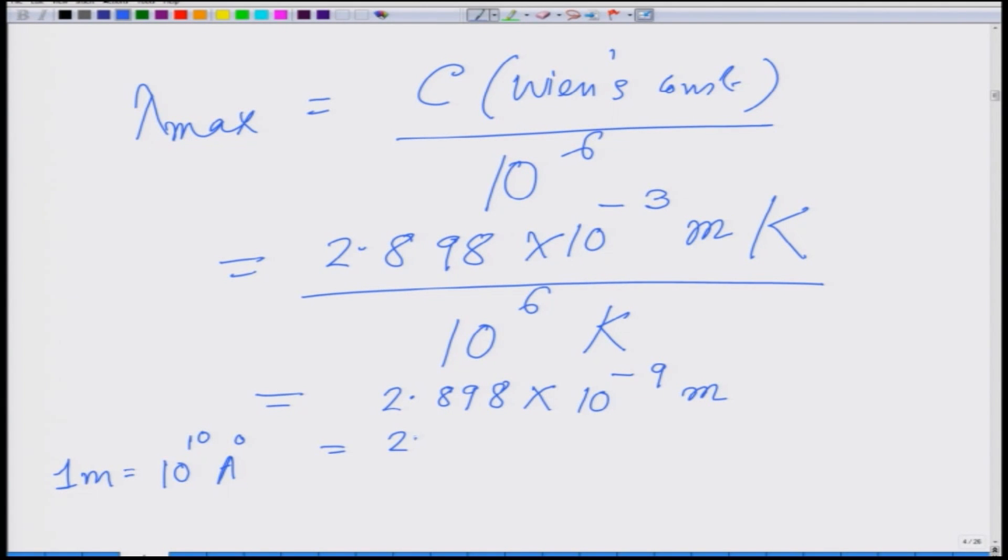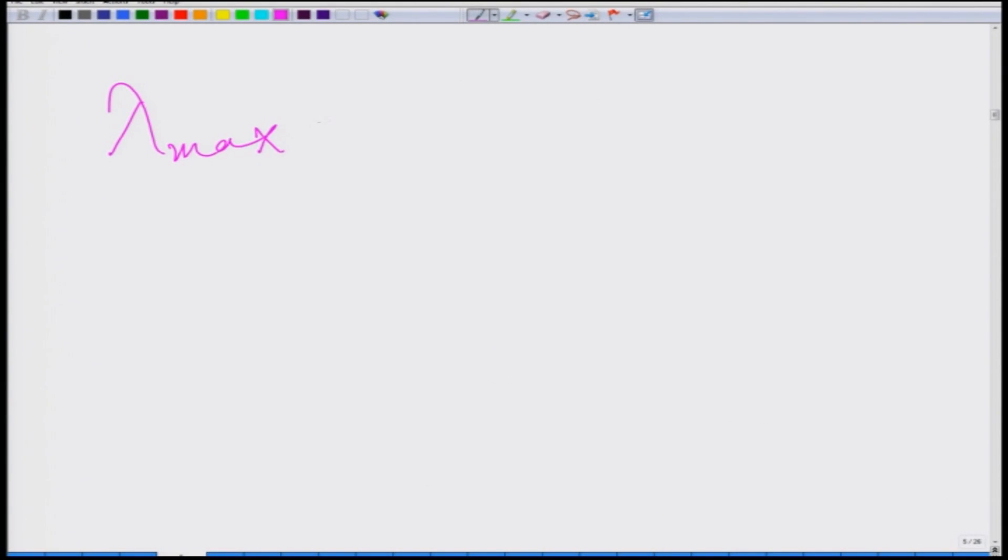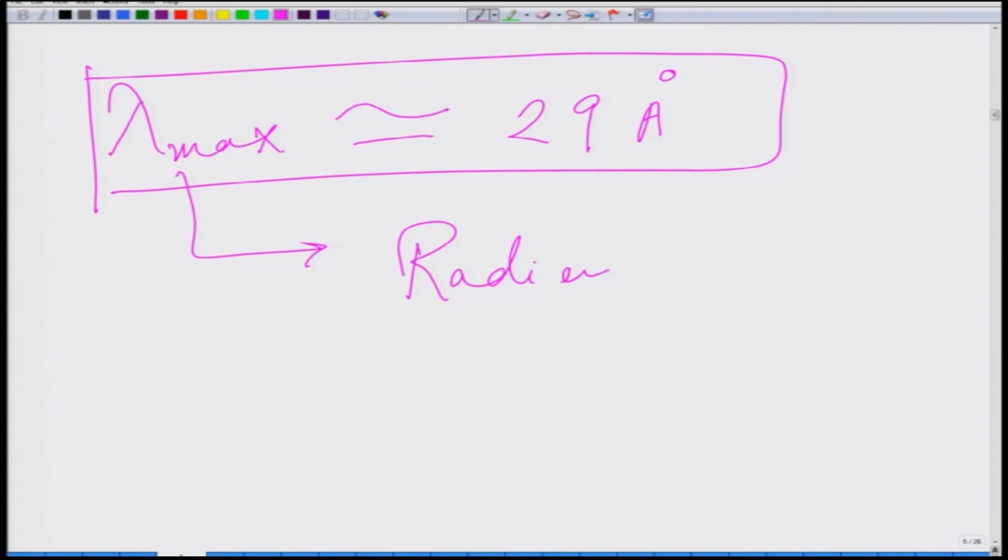When I write it here I get 2.898 into 10 to the power 9 into 1 10 to the power 10 Angstrom. So I basically get 28.98 Angstrom or approximately 29 Angstrom. That is the correct answer for lambda max at which wavelength the radiancy is maximum.